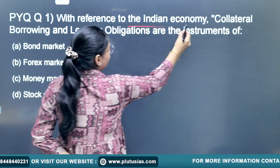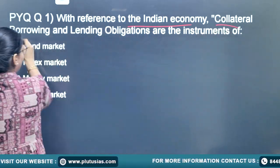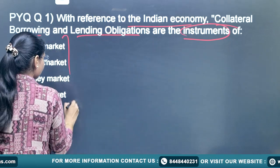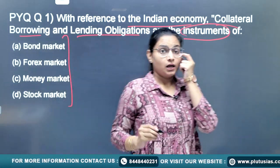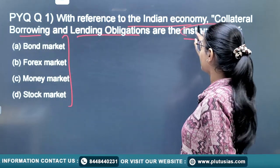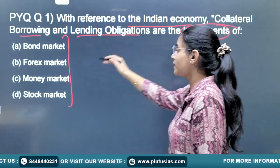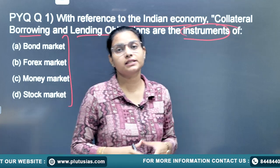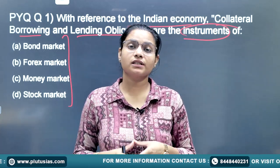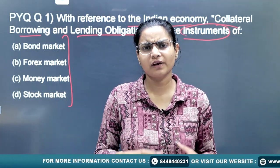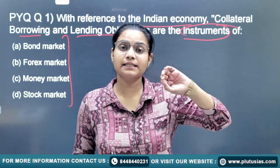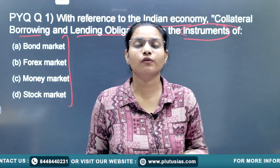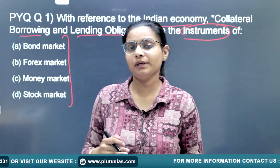On the screen you can see the first question — with reference to the Indian economy, collateral borrowing and lending obligations are the instruments of which market? It has given four options, so basically they are directly asking which market it is linked to. In previous years also we have seen such questions about banking operations, and sometimes they were asked in context — for example, Amber Vox was asked for the WTO.